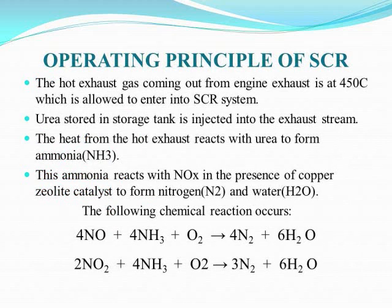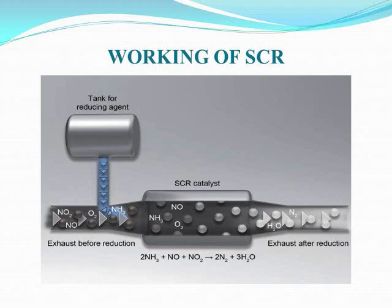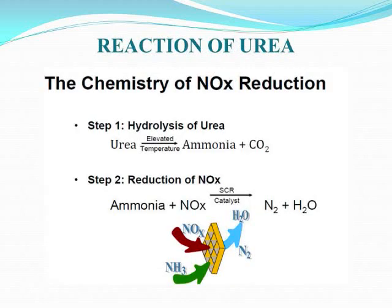Selective catalytic reduction is the process in which oxides of nitrogen in diesel exhaust are reduced to nitrogen and water by injecting ammonia into the exhaust. 'Selective' means targeting NOx in the diesel exhaust. 'Catalytic' means it requires a catalyst — we are using copper zeolite catalyst, chosen over vanadium pentoxide, platinum, rhodium, and palladium because it is cost-effective, cheaper, and can operate at higher temperatures. 'Reduction' means NOx is reduced to nitrogen.